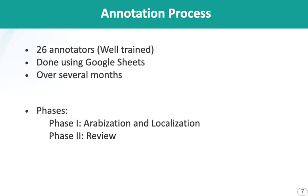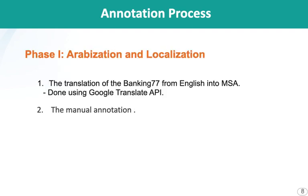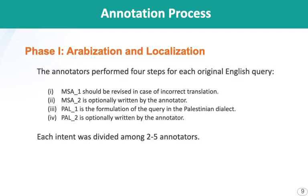The annotation process went on for a few months. We used 26 annotators, and there are two main phases for the annotation. The first one is arabization and localization, and the second one is a final review of the data. For arabization and localization, we performed translation from Banking77 English into MSA using Google Translate, and then we performed manual annotations and revision.